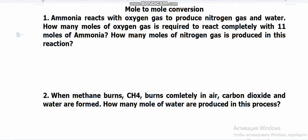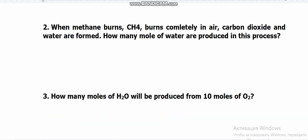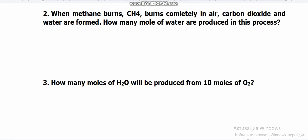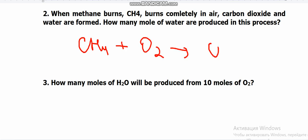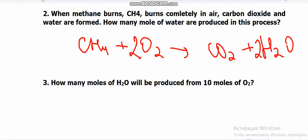Next question: when methane burns completely in air, carbon dioxide and water are formed. How many moles of water are produced? First, let's write the reaction: CH₄ + O₂ → CO₂ + H₂O. We must balance the chemical equation first — without balancing, we cannot solve these problems. We write 2 in front of H₂O and 2 in front of O₂, so the equation is now balanced.